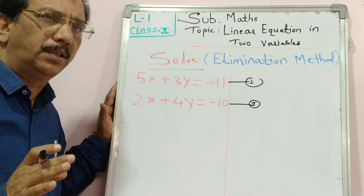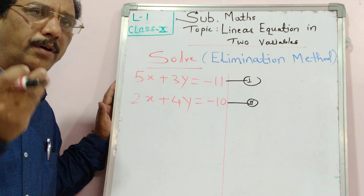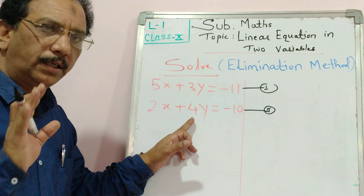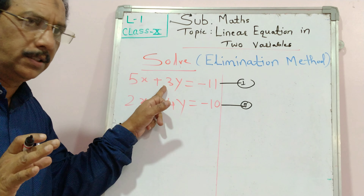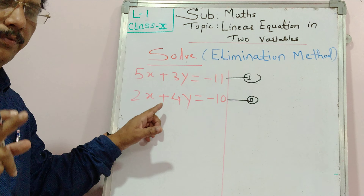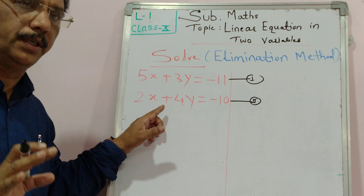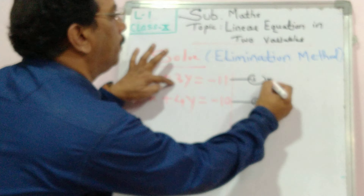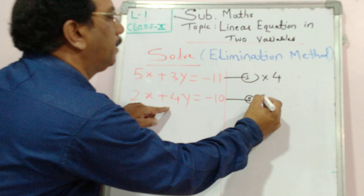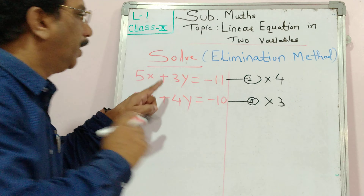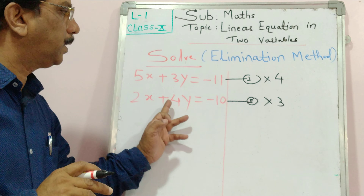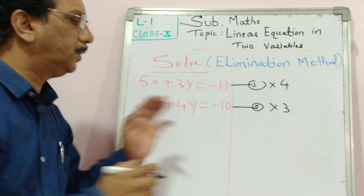To apply the elimination method, we have to eliminate one of the variables. I decided to eliminate y. Let us look at the coefficients of y: here it is 3 and the other is 4. To make both coefficients the same, multiply 3 by 4 and 4 by 3 — both become 12. If the coefficients were 2 and 6, you would just find the LCM and multiply accordingly.